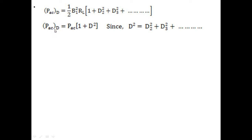Replacing D2² + D3² + ... with D², the distorted AC power equals PAC·(1 + D²). As the number of harmonic components increases, the total distortion at the output also increases, since PAC gets multiplied by (1 + D²). This is the power output due to distortion. If there is no distortion, set D = 0, and PAC_D simply equals PAC with no harmonic component contribution.